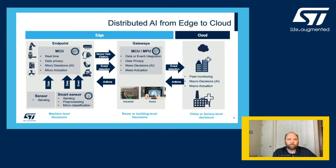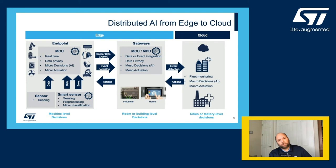One good example of a distributed AI approach are voice assistants such as Alexa or Siri. The detection of the trigger word — for example, 'Alexa' — happens on the edge device. And once it is detected, the connection to the cloud is established and the recognition of the following voice commands or questions is handled in the cloud, and the result is sent back to the edge device. And I'm also wondering how many of your Alexas just went off during my presentation.